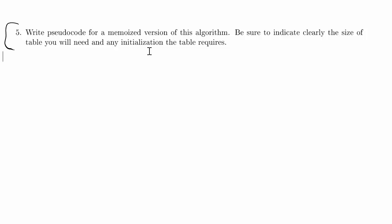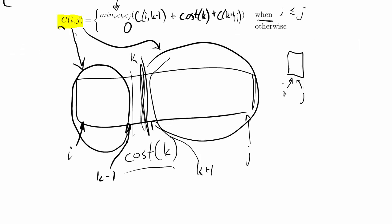So I'm just going to pop back up and take a look at this recurrence that we created. That's right up at the top of the screen here. C_ij is the minimum over i less than or equal to k less than or equal to j of C_i(k-1) plus cost of k plus C_(k+1)j when i is less than or equal to j and 0 otherwise.